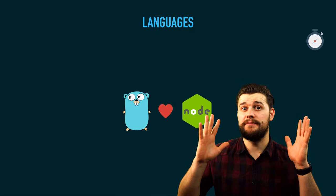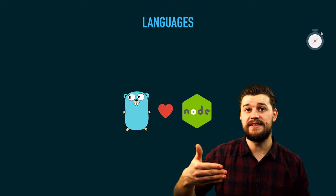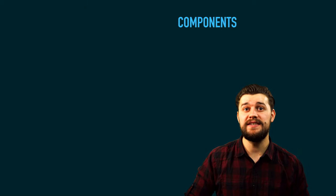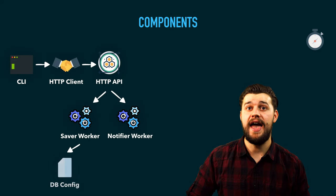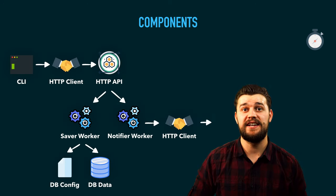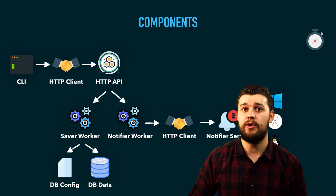Now that I showed you how the final application looks, let's talk about what we will be building during this video series. The technologies we'll be using are Go — pretty much 90% of the code is going to be Go — and we're also going to be using Node.js for the operating system notification. Speaking of components, we're going to have the CLI app itself, which takes CLI input, processes it and sends it over to a backend HTTP API, which is basically going to process those records. Pretty much all the logic is going to lie in the server or the backend API.